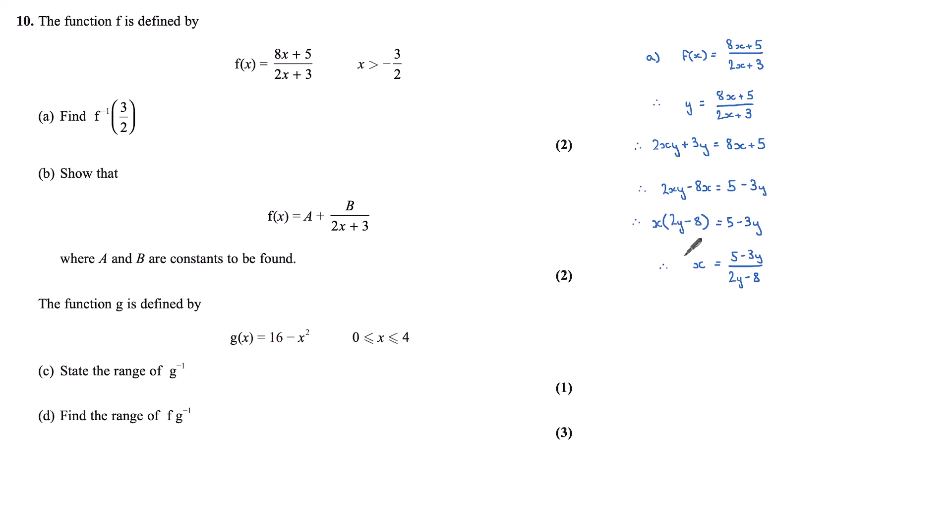Now this is how I find an inverse function. To write it, my x is my inverse and I put x's back for my y's. So my inverse function is (5 - 3x)/(2x - 8). Finding the inverse function of 3/2, I substitute 3/2 into this equation and I get -1/10.